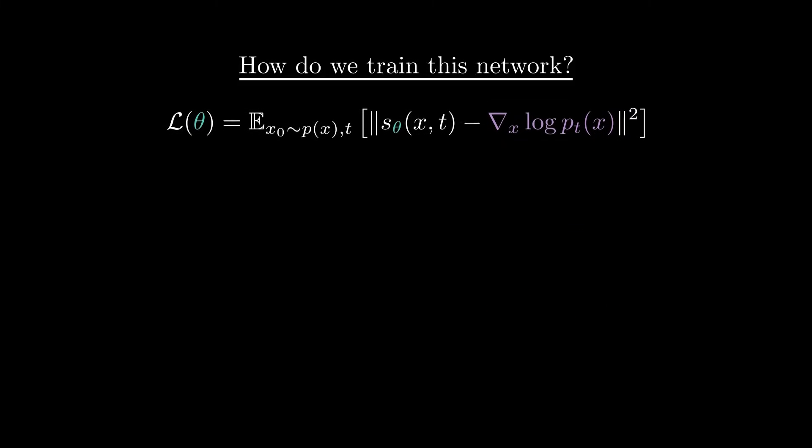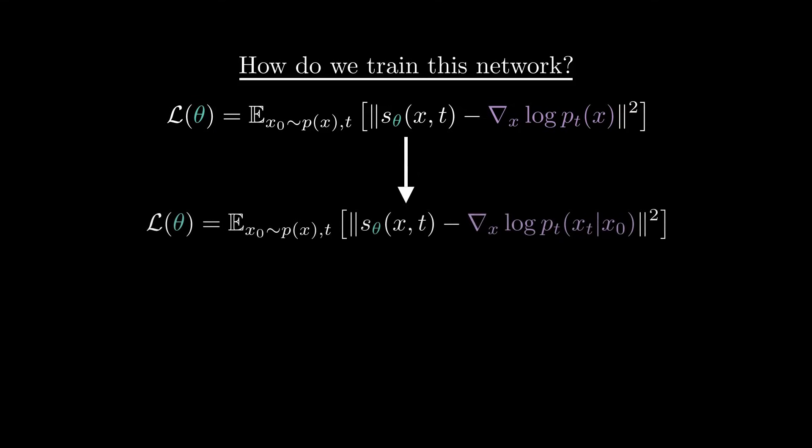Luckily, it's been known for a while that minimizing this kind of loss is equivalent to learning the score of this conditional distribution, p of x_t knowing x_0. I'll spare you the derivation here, but I'll include a link in the description for those who want to dig into the math. So what does this conditional score look like in practice?